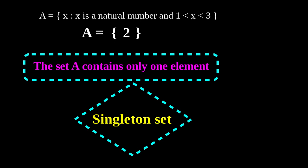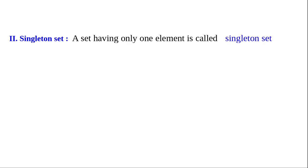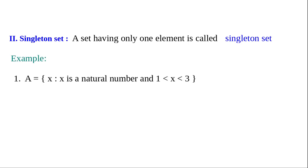A set which contains only one element is called a singleton set. Write this into your notebook. Second type: singleton set — a set having only one element is called the singleton set. Example one: A equals the set of all x such that x is a natural number and 1 less than x less than 3.